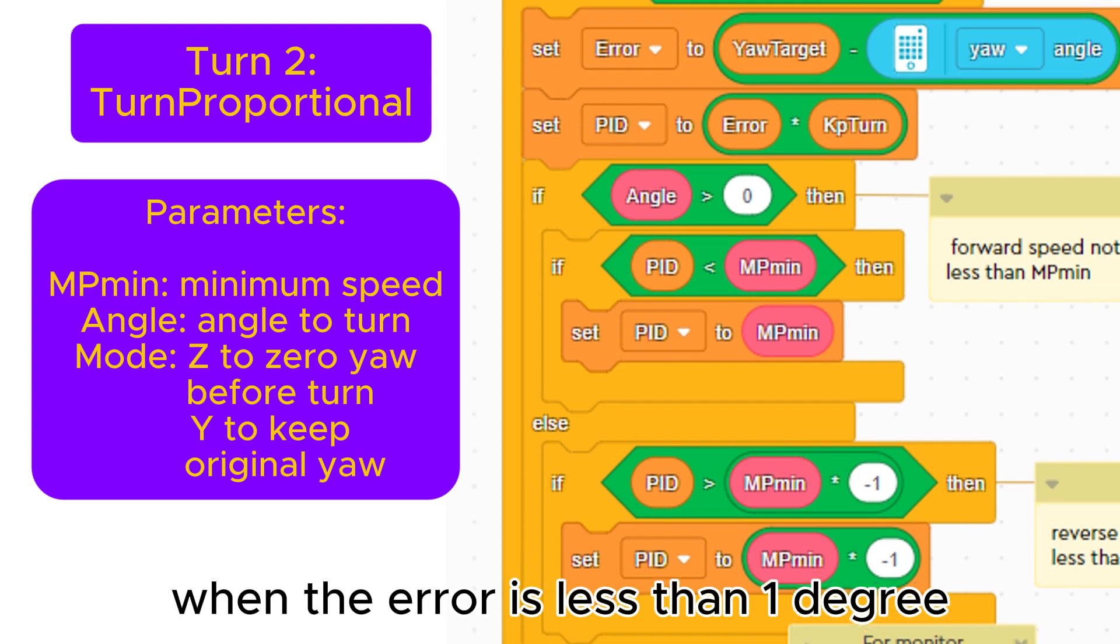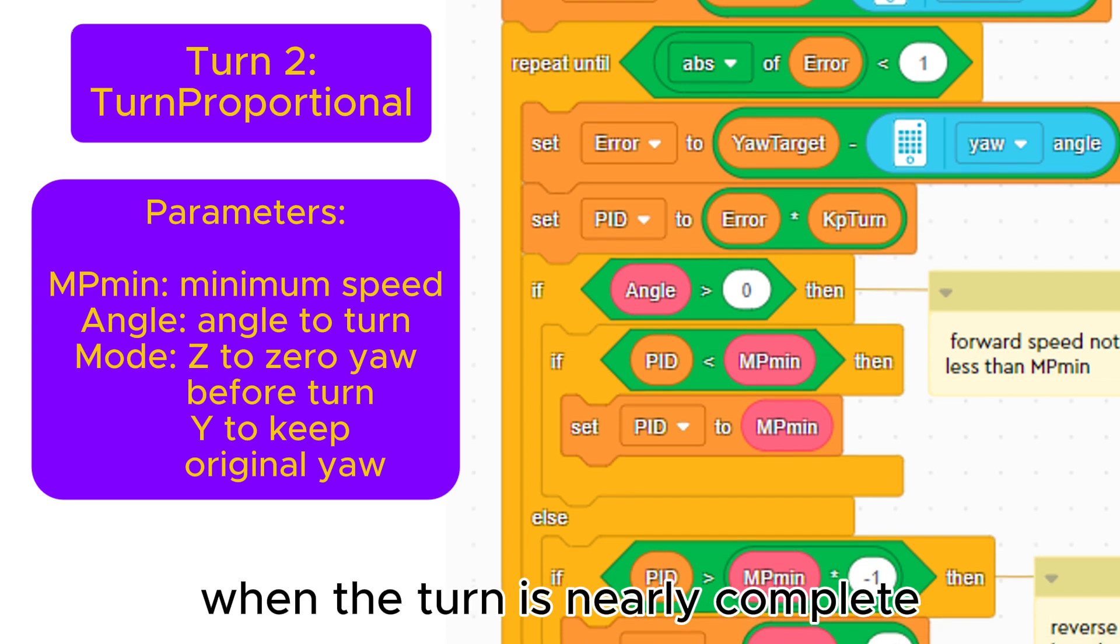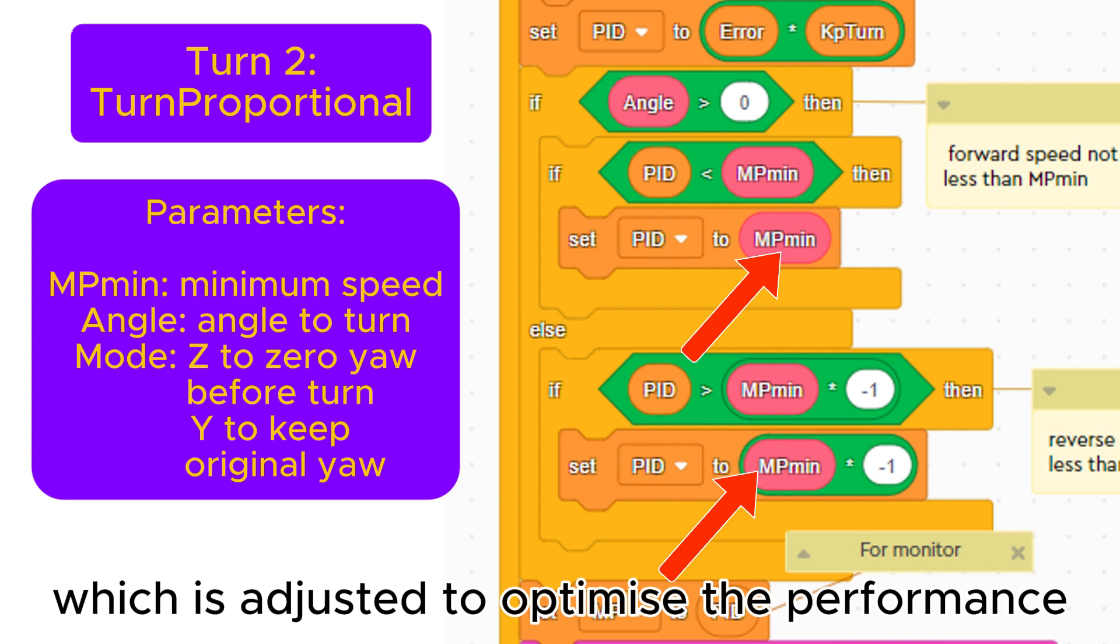When the error is less than one degree, the turn is complete. When the turn is nearly complete, the speed cannot fall below MP-min, which is adjusted to optimize the performance.